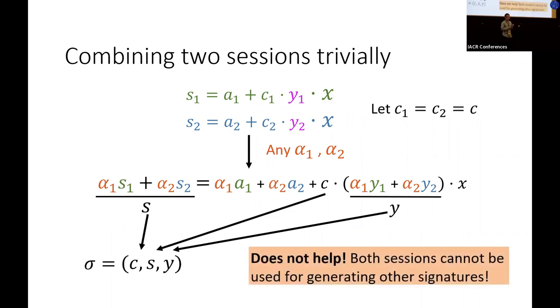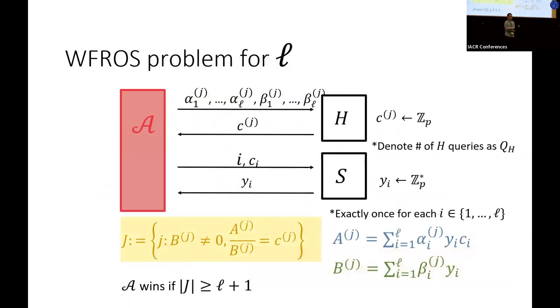But however, this does not help at all to break the security. Because if you think about it, what you're doing is just getting one signature from two signing sessions, and then both sessions cannot be used for generating other signatures. So basically, this action does not help. But however, it is unclear whether the adversary can do some other arbitrary things or combinations. So we define this WFROS problem to capture all possible ways the adversary can combine different sessions to get a new signature.